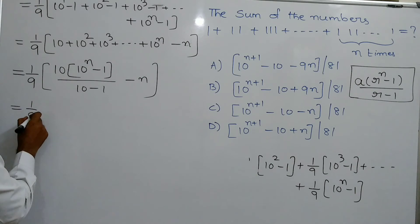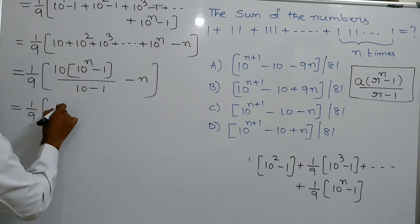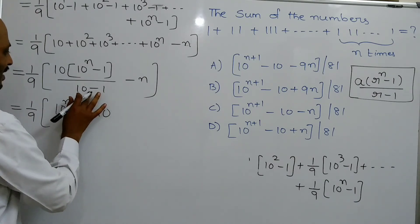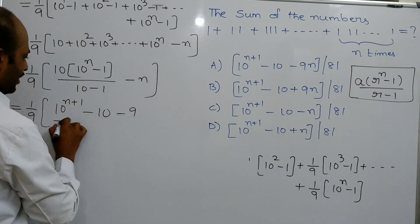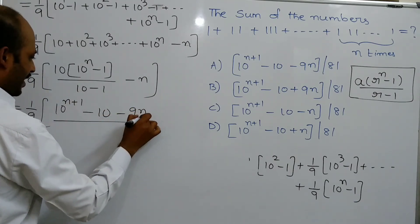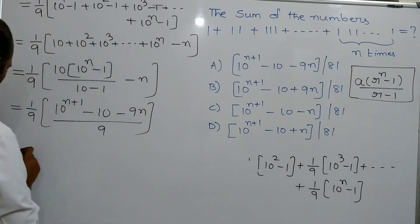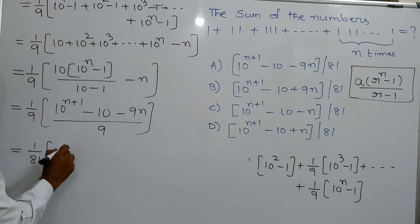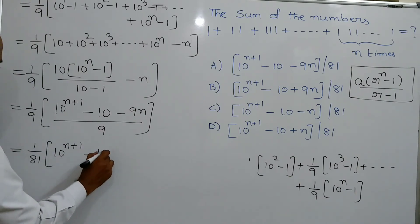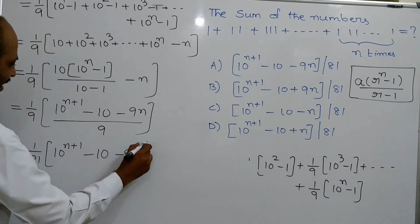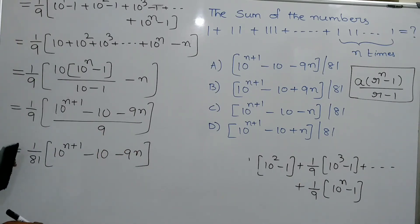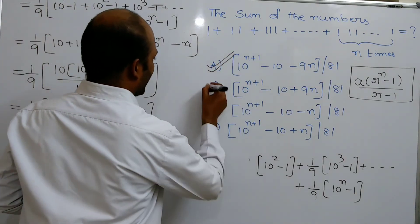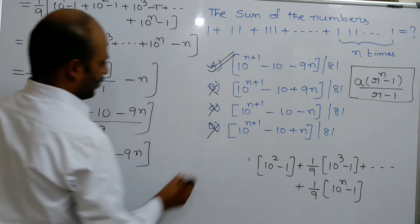So 1 by 9 into [10 into (10 power n minus 1) divided by 9] minus n. Simplifying: 10 into (10 power n minus 1) equals 10 power (n+1) minus 10. Taking LCM as 9 gives [10 power (n+1) minus 10 minus 9n] divided by 9. The full expression is 1 by 81 into (10 power (n+1) minus 10 minus 9n). Verify the options — option A is the correct option.